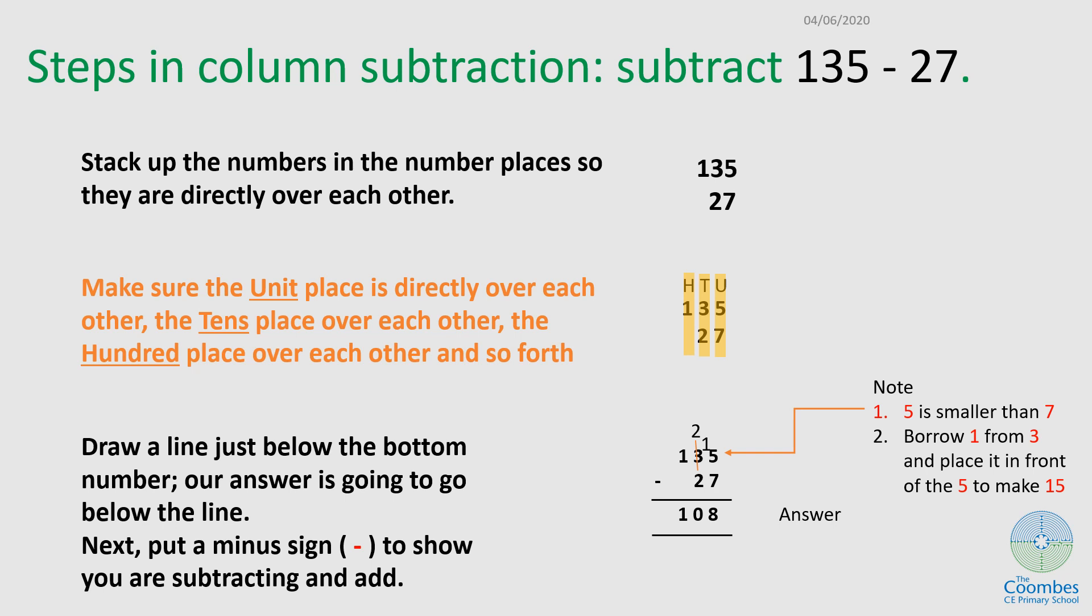5 take away 7 is not possible, so I need to borrow 1 from the 3. If I borrow 1 from the 3, 2 remains, and I bring that 1 to the 5 to make it 15. Now 15 take away 7 is 8. 2 remains here, I'll take away another 2, and that gives me 0. 1 take away nothing is 1.